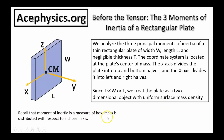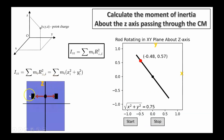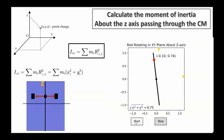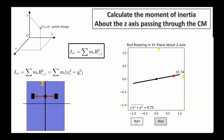Recall that moment of inertia is a measure of how mass is distributed with respect to a chosen axis. To calculate the moment of inertia of this plate about the z-axis passing through its center of mass, the formula is m times perpendicular radius squared. We divide the plate up into many small mass elements, and take each mass element multiplied by the square of the perpendicular distance from the z-axis. As the plate spins about the z-axis, we project the motion onto the x-y plane. For the point shown, this distance stays fixed at 0.75 meters — even though x and y change, the perpendicular distance to the z-axis does not.